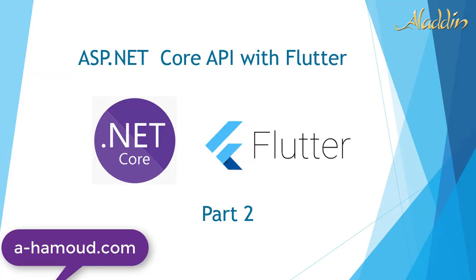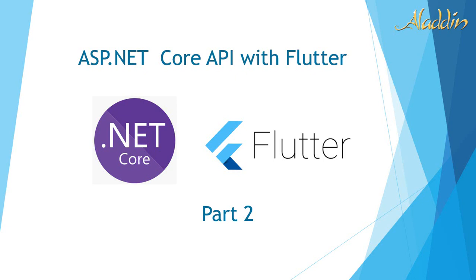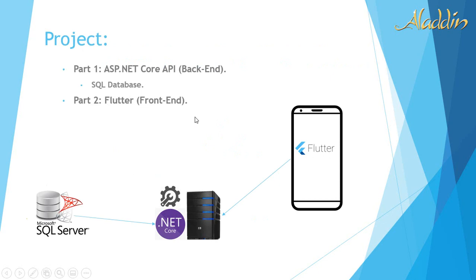Hi and welcome again to our second video of ASP.NET Core with Flutter. As we said in our second video, we gave a small introduction about Flutter — what Flutter is and why we are using it. Today we are going to create the ASP.NET Core API for the back end, and we'll get the Flutter front end after that. Today's video will be focused on ASP.NET Core, showing how to create the API. It will be simple — our main job is how to call it and present it in Flutter.